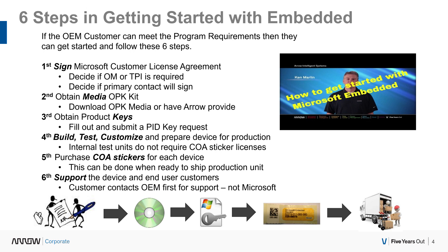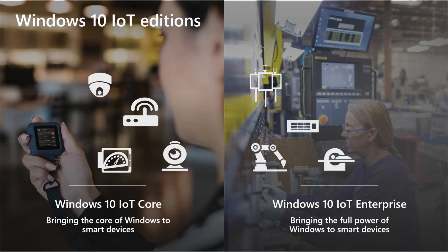You are considered the OEM, so you have to support the device. The end-user customer will call you, not Microsoft, because you understand what type of device it is and what customizations are needed. So: sign the agreement, get media and a key, test, buy the sticker licenses, sell and ship, then support. I also have a YouTube video on how to get started that covers this process. Now, there are two IOT editions people often confuse: IOT Core and IOT Enterprise — and today I'm covering IOT Enterprise.